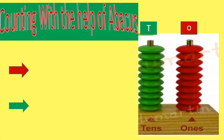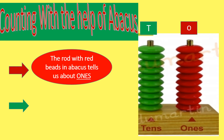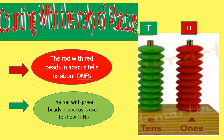Before we start solving our exercises, I want you to learn counting with the help of an abacus. In front of you is a picture of an abacus which has two rods. The first rod has green beads and the second rod has red beads. The red rod is called the ones rod — O-N-E-S — and the green rod tells us about tens — T-E-N-S. So the green rod represents tens and the red rod represents ones.